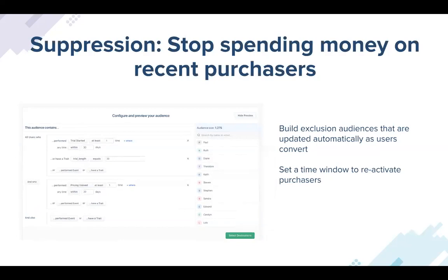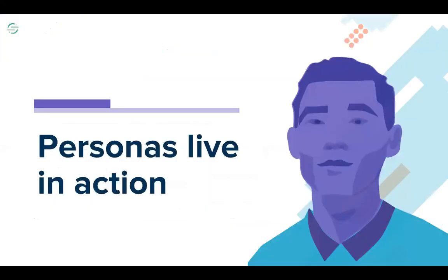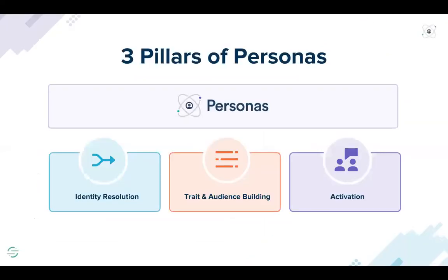As Fabian will dive into in the next section, if you know that a user has churned for a specific reason — say they no longer live in a serviceable area — continuing to direct ad spend to them really is a waste of your valuable ad dollars. So now that we know it's possible, let's talk about how it actually works in the product.